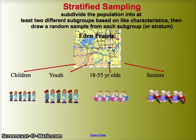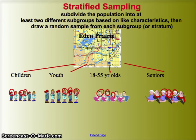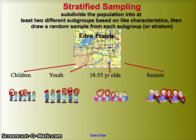A better method might be to break up the population into groups by age: children, youth or teens, 18-to-55-year-olds, and seniors. Within each group, I would make a random selection — randomly choosing three children, three youth, three 18-to-55-year-olds, and three seniors. It's not a simple random sample because based on my methodology, there's absolutely no way I can select 12 seniors. The definition of a simple random sample says any 12 you can imagine might be selected. So that's stratified sampling — we break the population up into groups sharing a like characteristic, then randomly select within each group.